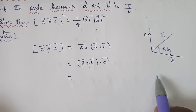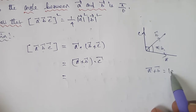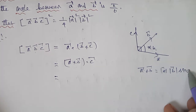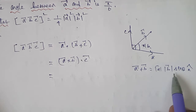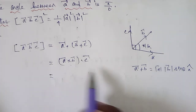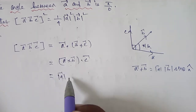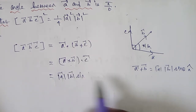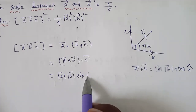By the definition of cross product, A cross B equals modulus of A vector times modulus of B vector times sin θ times n-cap. So A cross B = |A||B| sin θ · n̂. Here the angle between a vector and b vector is π/6, so theta equals π/6.